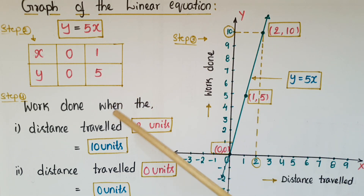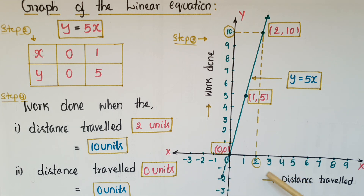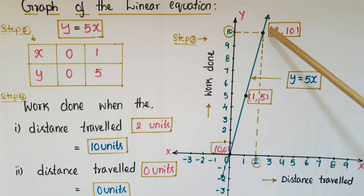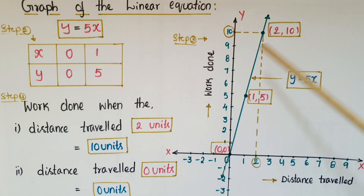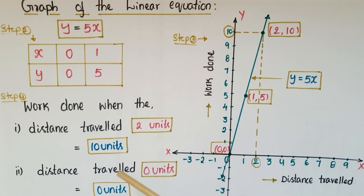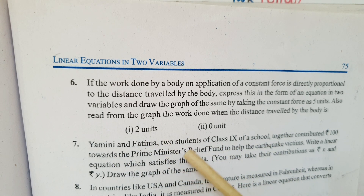Next, we find the work done when the distance traveled is two units and zero units. From the graph, distance traveled is on the x-axis. At two units, the corresponding value on the y-axis is 10 units, so mark the point (2, 10). When distance traveled is zero units, the work done is also zero units.